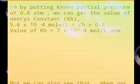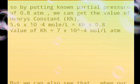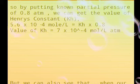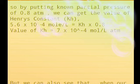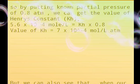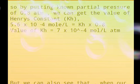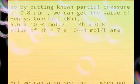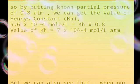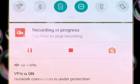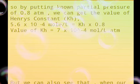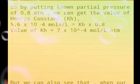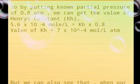We have to put the value of 0.8 atmosphere because it was the pressure of the N2 gas. When the pressure and solubility are given, we can find the value of Kh from Henry's law. We can have the value of Kh as 7 times 10 to the minus 4 mole per liter atmosphere.